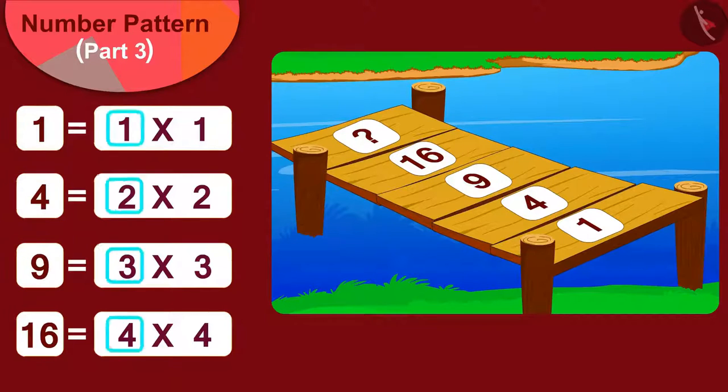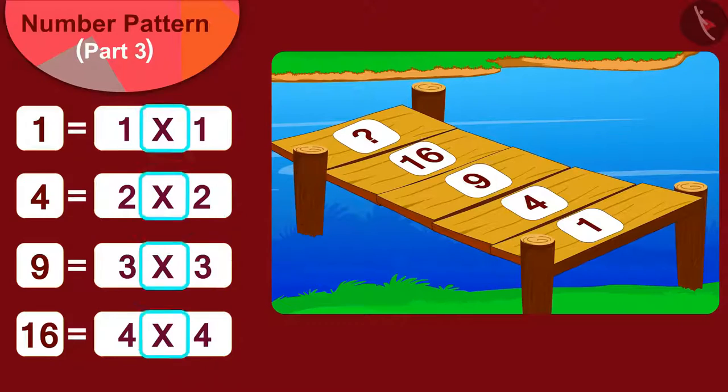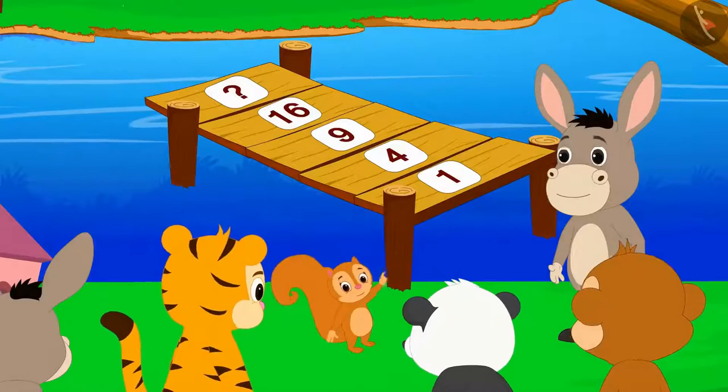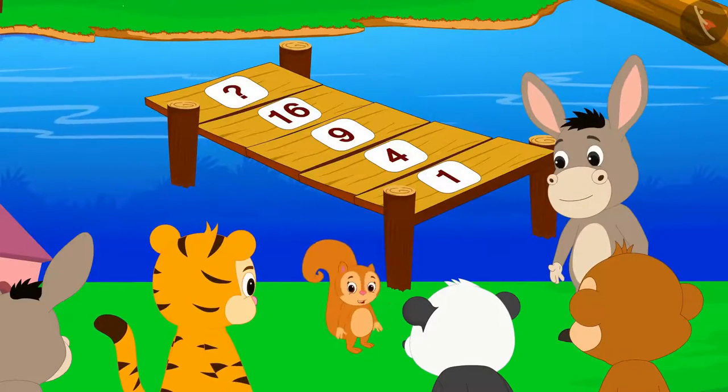This means that the number written on the plank can be found by multiplying the number of the plank by itself. Chanda excitedly told the villagers.